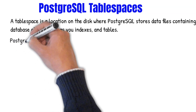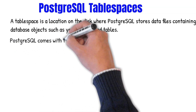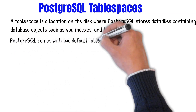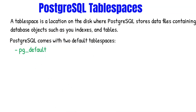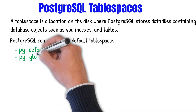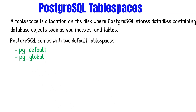There are two default tablespaces that come with PostgreSQL: the pg_default tablespace and the pg_global tablespace. These two tablespaces are automatically created when the database cluster is initialized.